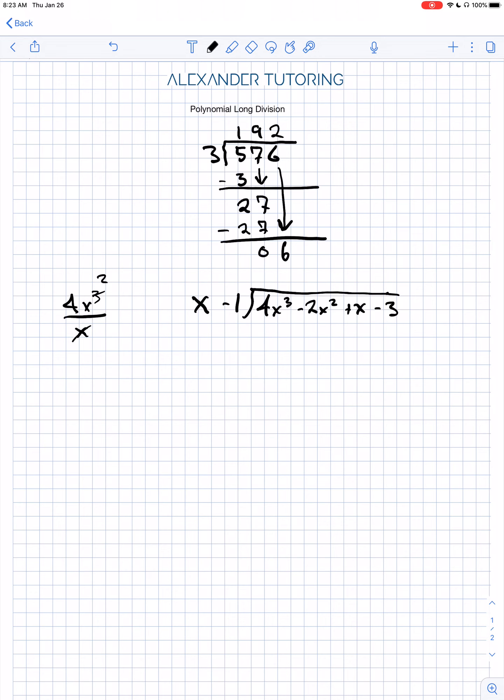So x goes into 4x cubed 4x squared times. In other words, 4x cubed divided by x is 4x squared. Now, just like regular long division, we're going to do this times this whole thing this time. Now we're going to use the whole thing. So we're going to have to distribute it.